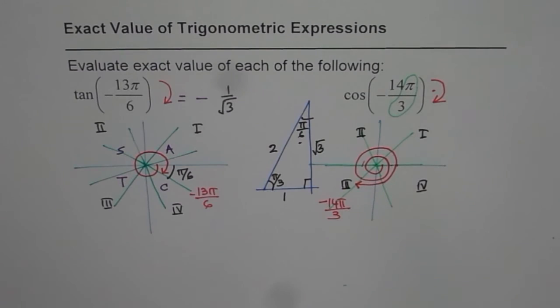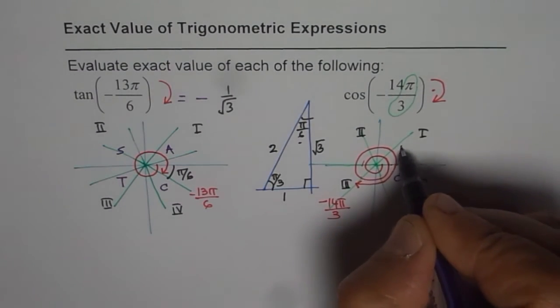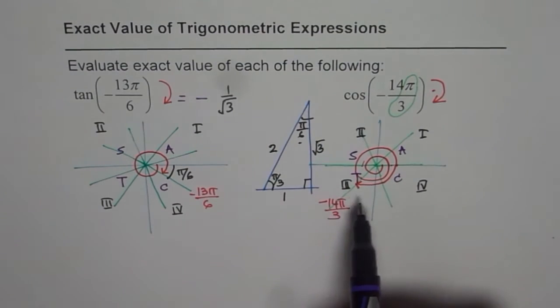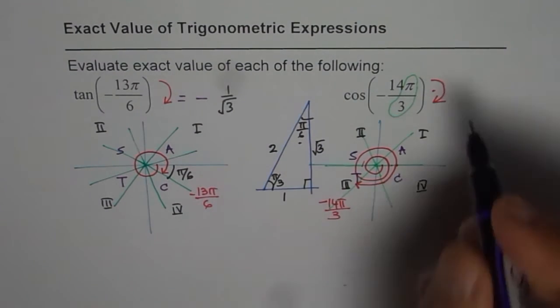And you know from the CAST rule, C, A, S, T, you are looking for cos, cos is negative. Tan is positive here. So we get a negative value.